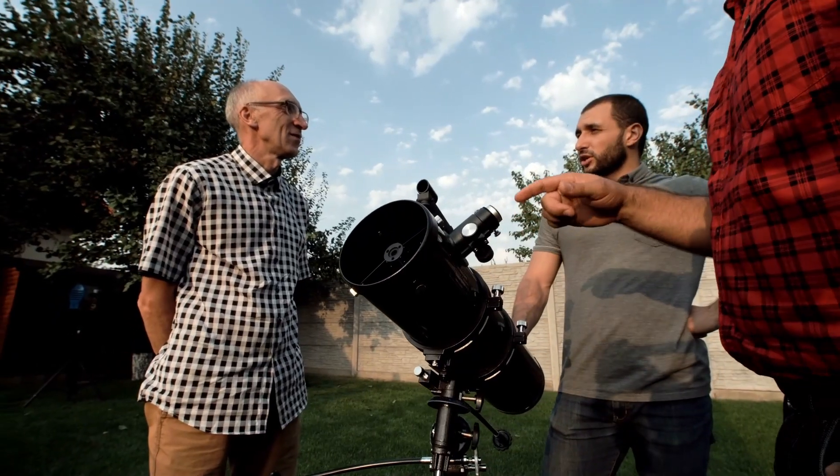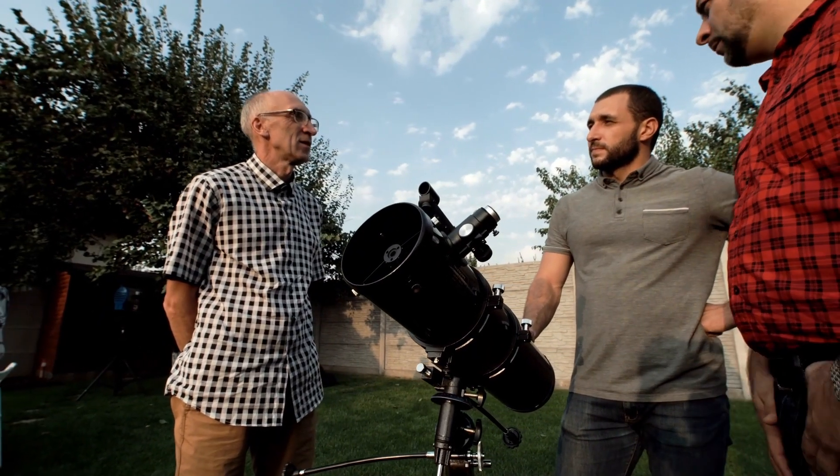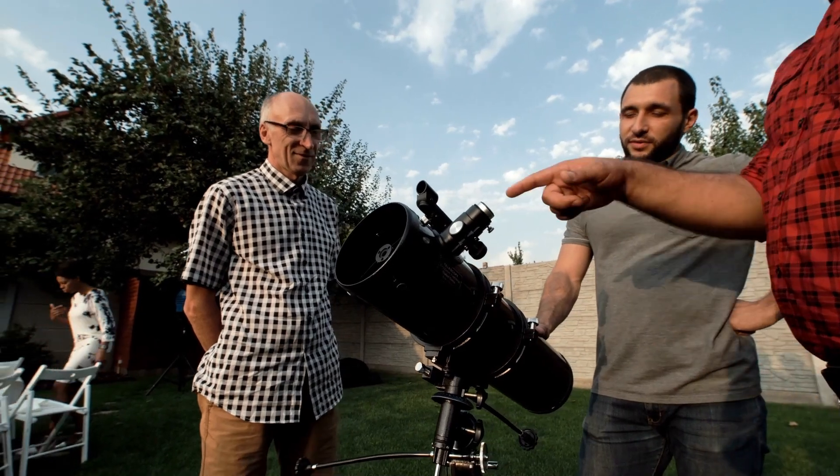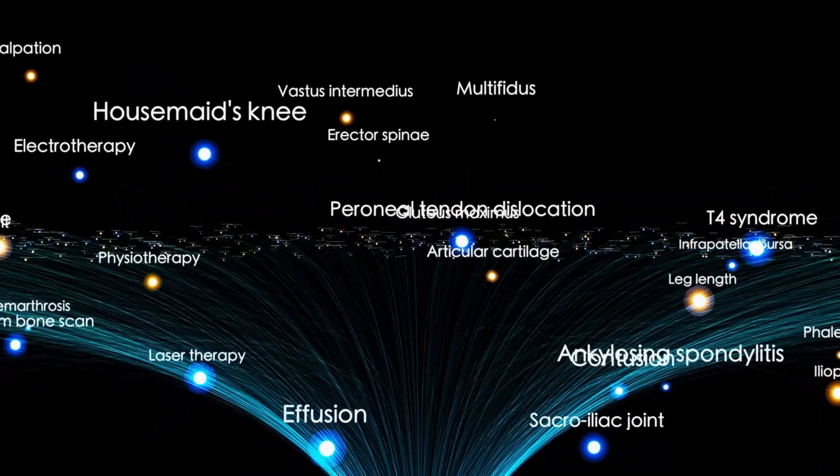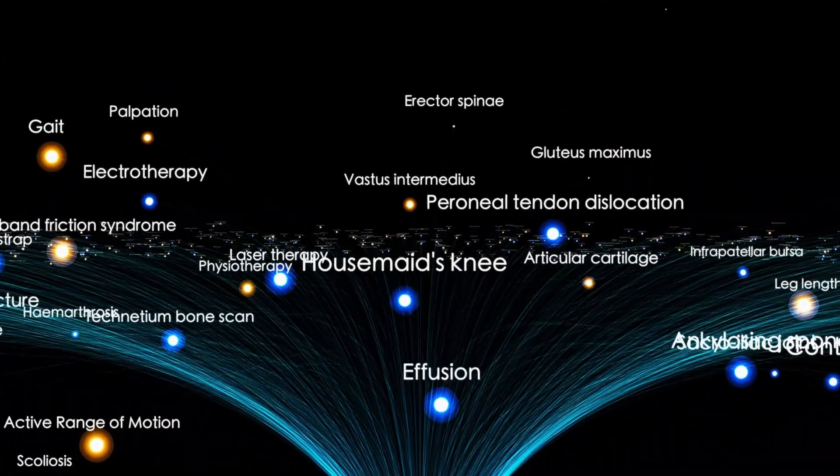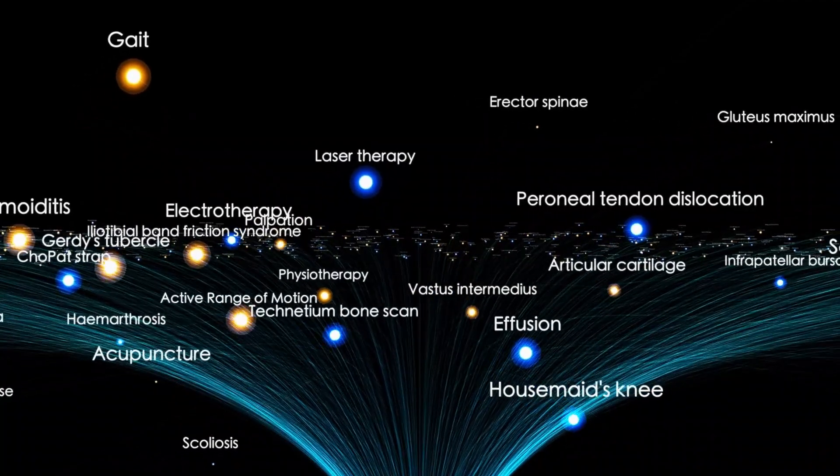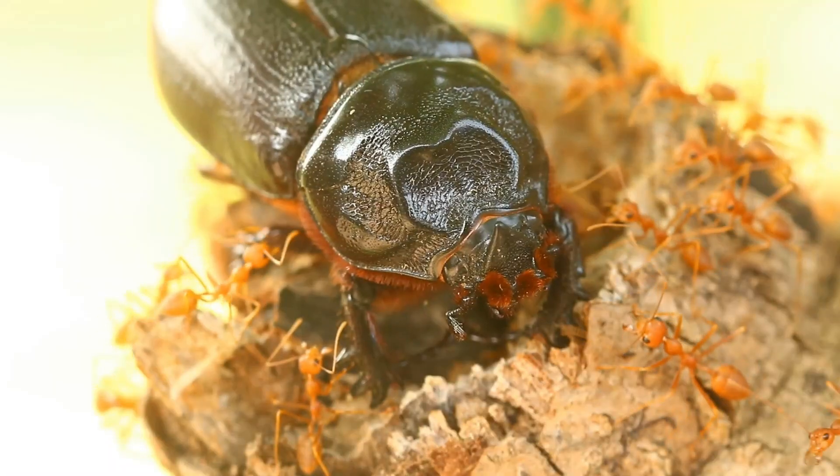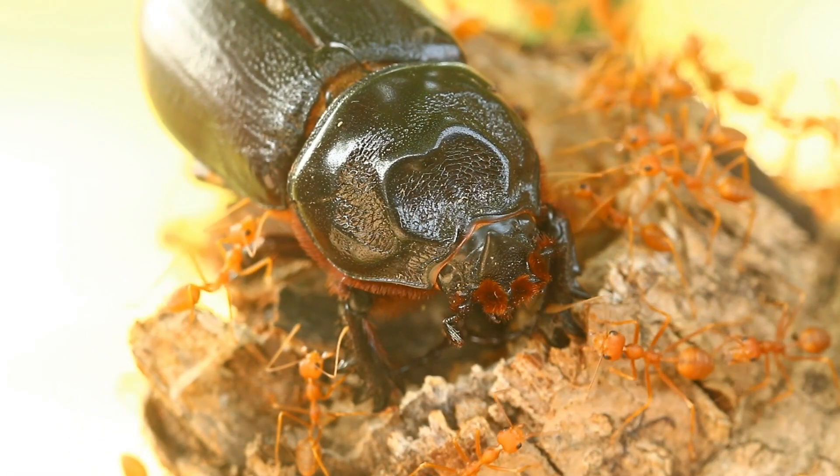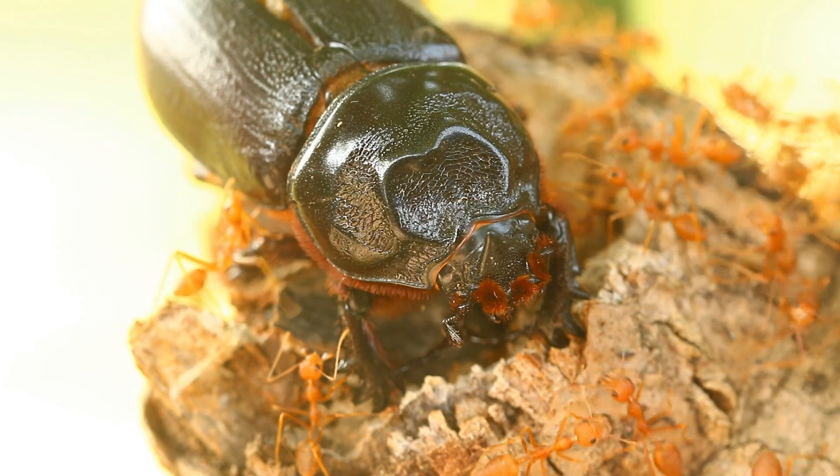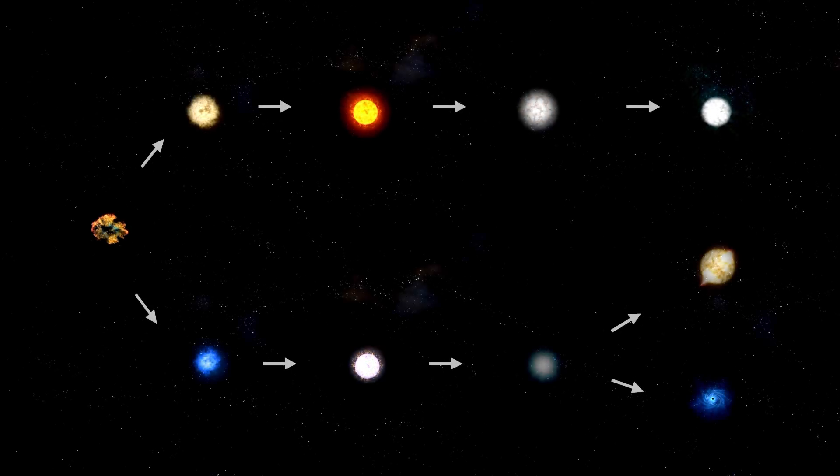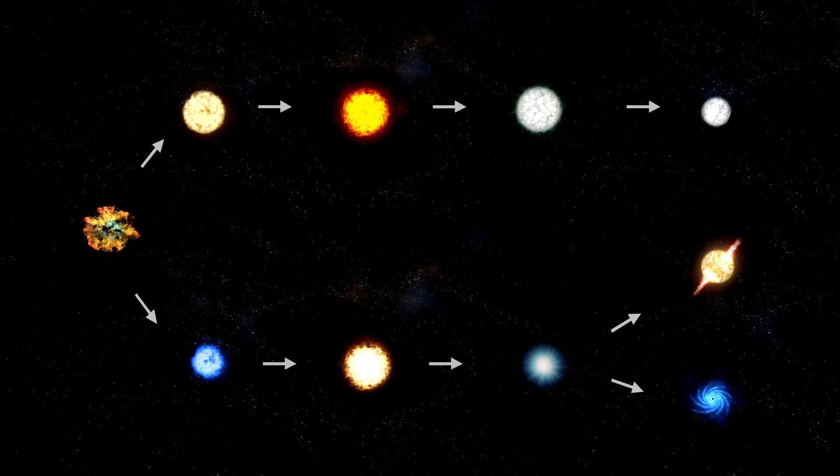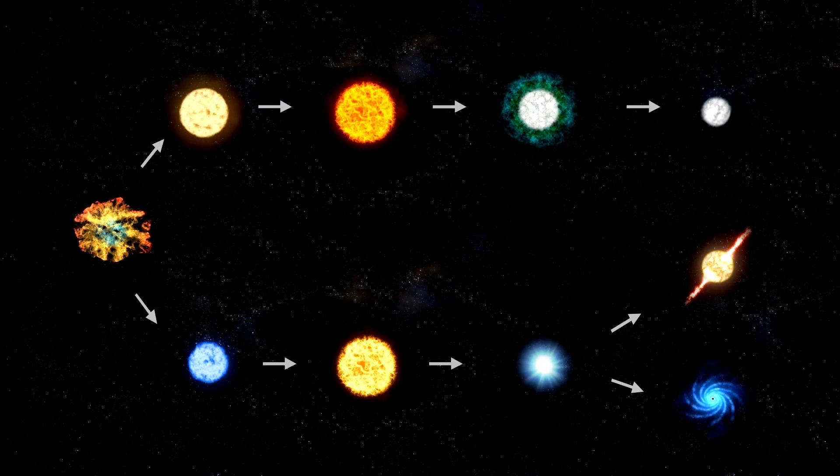When Betelgeuse got dimmer and cooler, it made astronomers share lots of ideas and theories about what might be happening there. And get ready because there's a big discovery that's about to shake up everything we thought we knew about this massive red star. But for now, let's focus on what this dimming might mean for our understanding of the cosmos. When a star gets dimmer, it could be a normal part of its life cycle, and there are many reasons why this might happen.